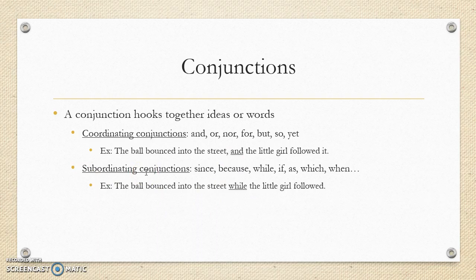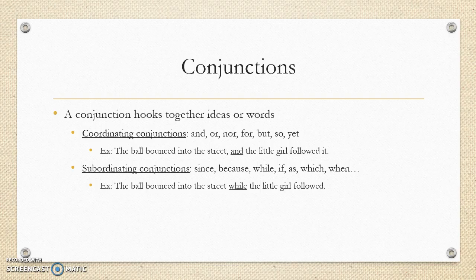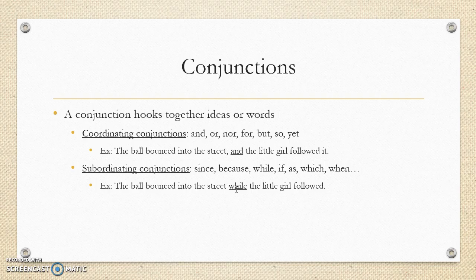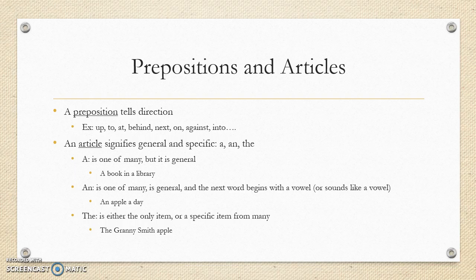Subordinating conjunctions show a relationship where one clause is more important than the other. These include words like since, because, while, as, if, when — and there are many of them. A helpful mnemonic is WABISU: W for when/while, A for as, B for because, I for if, S for since, U for unless. Example: 'The ball bounced into the street while the little girl followed' — no comma needed, because subordinating conjunctions are stronger than coordinating ones.